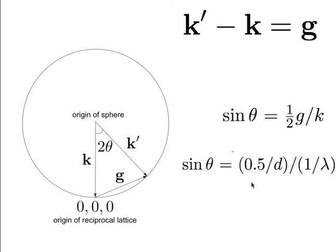Substituting g = 1/d and k = 1/lambda and rearranging recovers the Bragg equation. So the Ewald sphere is simply the vector representation of the Bragg equation. It means that if I draw a sphere beginning with the incident beam going towards the origin of the reciprocal lattice, with radius 1/lambda, and if that sphere touches another reciprocal lattice point other than the origin, then those planes satisfy the Bragg equation and will give you diffraction. Any reciprocal lattice point which touches that sphere satisfies the Bragg equation and gives you a diffracted beam.